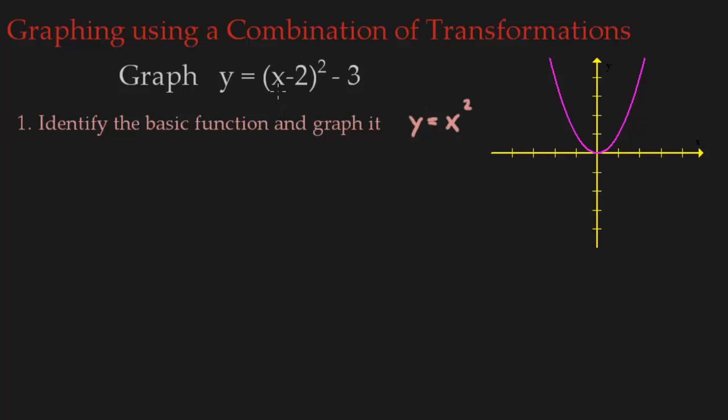So, start at x, what's the first transformation you hit? A minus 2, which is a horizontal shift, 2 to the right. If you do that, what you're doing is you're graphing y equals (x minus 2) squared, which is fine. That's part of what we have. So let's go ahead and graph that.